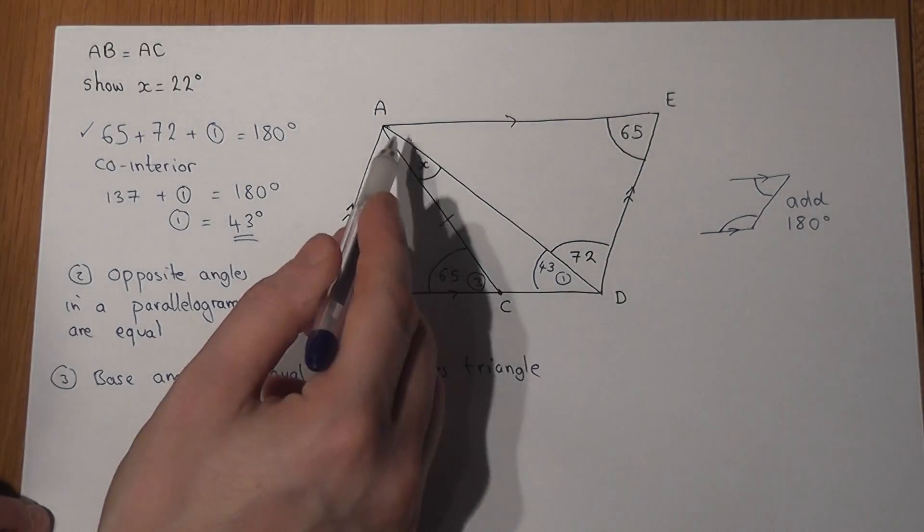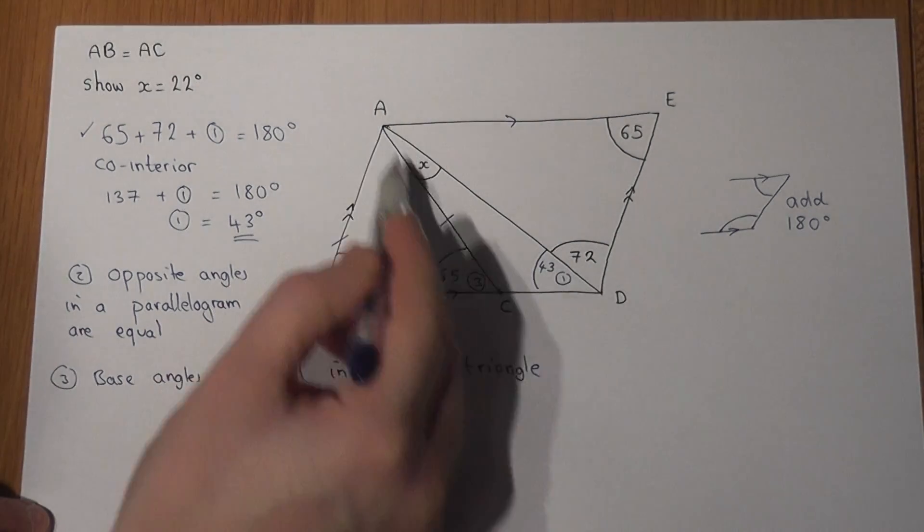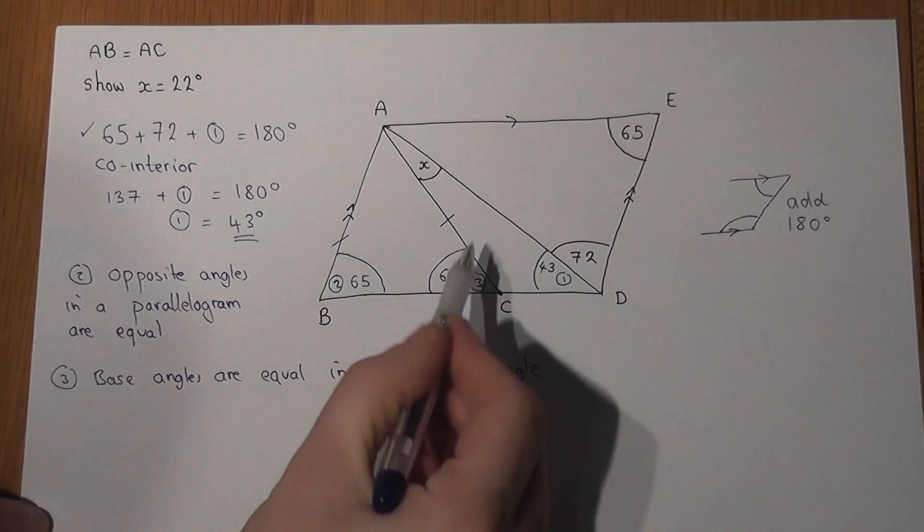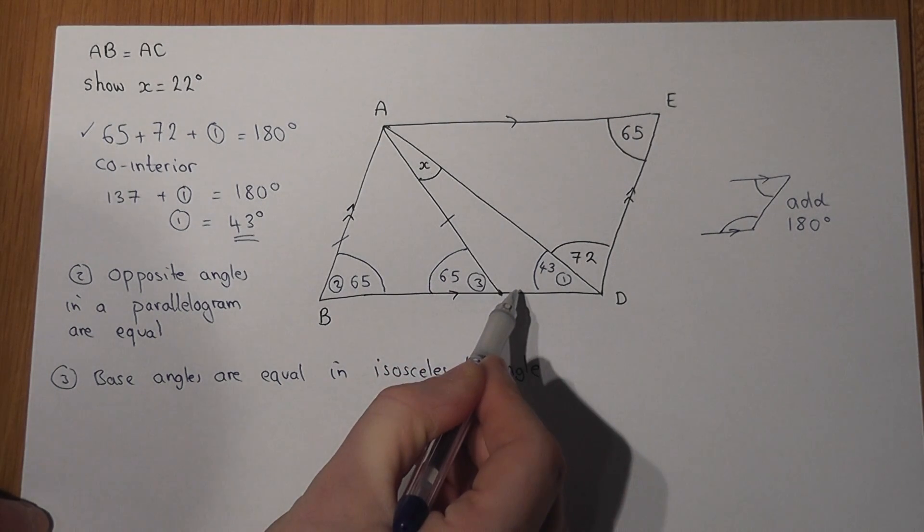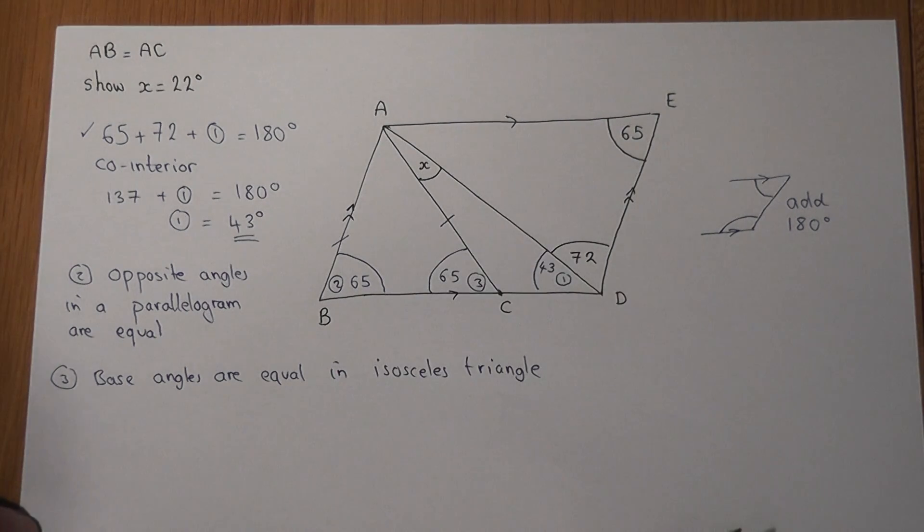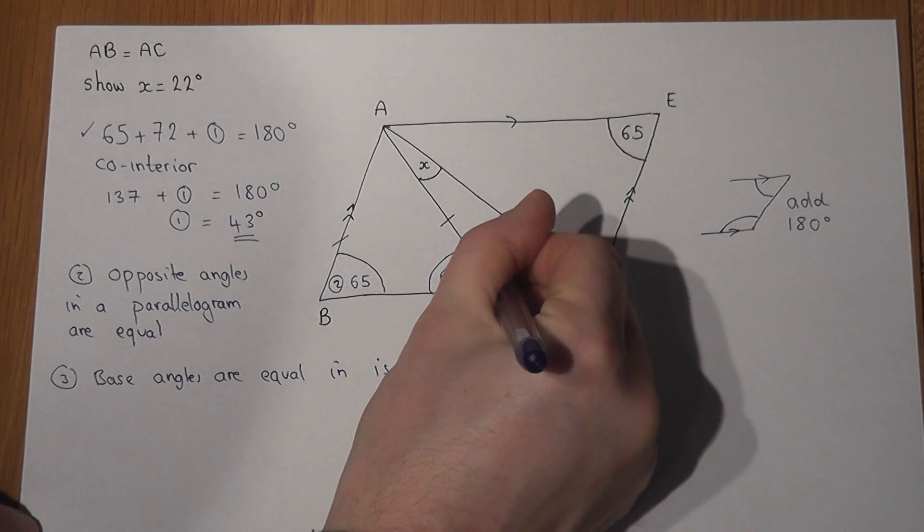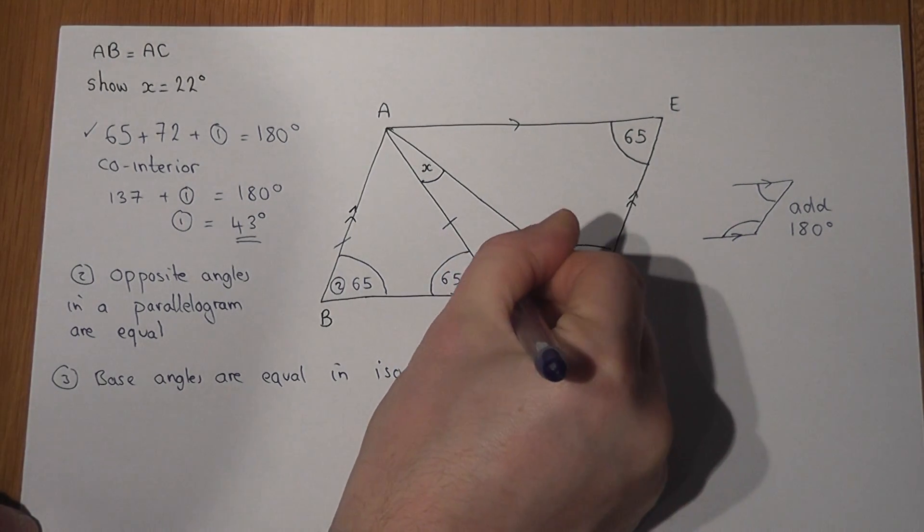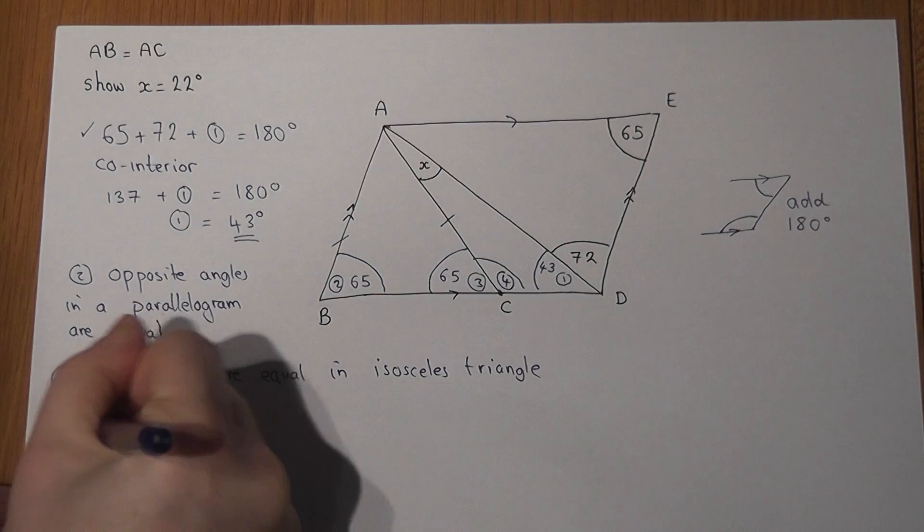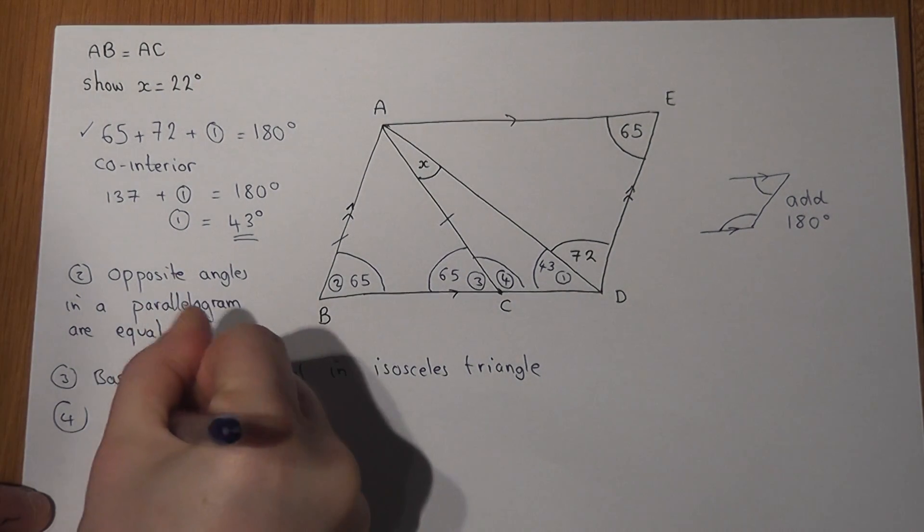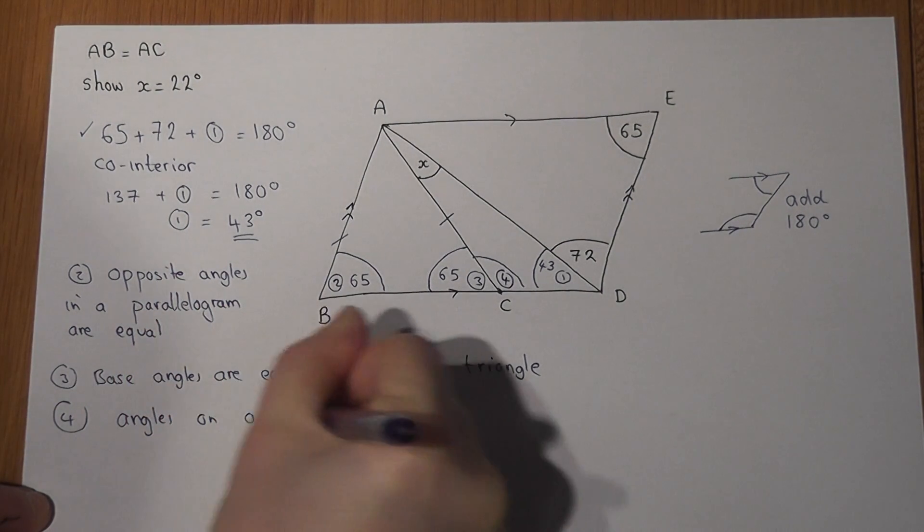So if I can find this angle, I will know two of the three angles. Well, I can find angle four pretty easily because angles on a straight line add to 180.